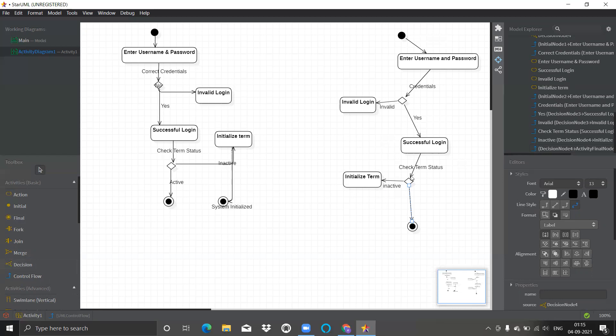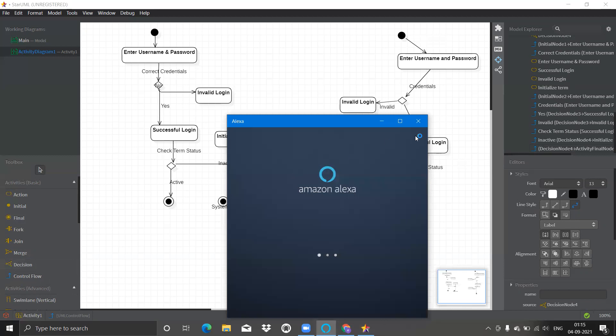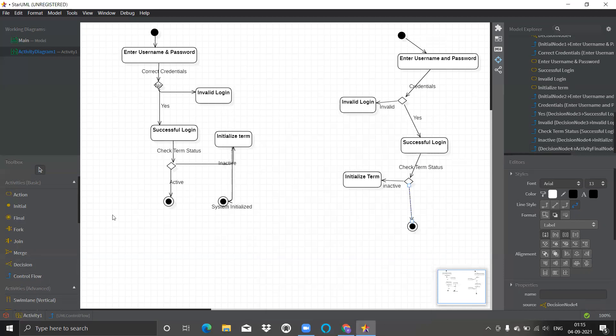A branch is basically used for the decision based activities. Certain action divides into like here you can see, successful login is divided into two decisions. That is initialized term or stop. This is what you can say the branch type of symbol. Then all branches at some point are followed by a merge. Different different branches are there if you want to join them. You can make use of merge symbol. And the last one after the merge all the parallel activities must be combined by a join before ending it to the final state.